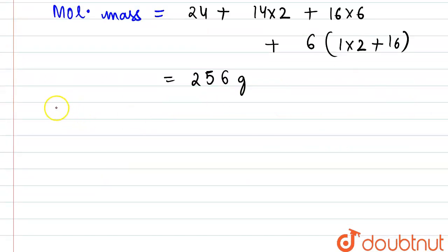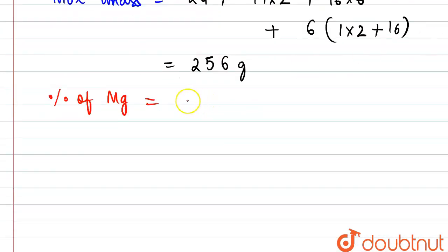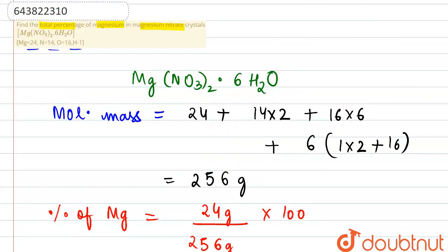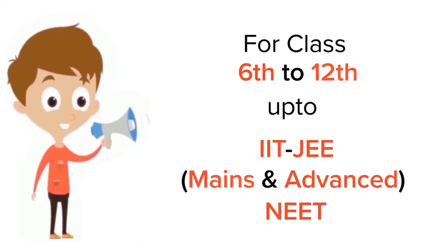Next, we find the percentage of magnesium. We keep the mass of magnesium in the numerator — there is only one magnesium atom in the formula, with a mass of 24 grams — divided by the total molecular mass of the crystal, 256 grams, multiplied by 100 for the percentage. From here, the answer is 9.38%. Thank you. For class 6 to 12th, IIT, and NEET level, trusted by more than 5 crore students.